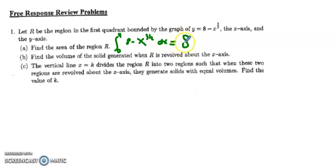But I think we can actually do this without a calculator, and I just want to do that. To integrate, I get 8x minus, and then x is going to go up to the 5 halves, and of course I divide by 5 halves to get 2 fifths here.